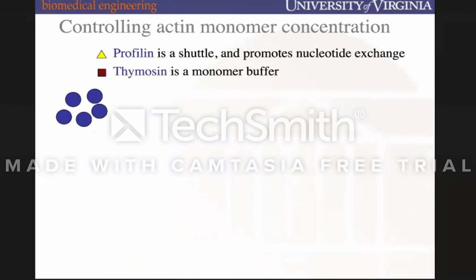There are regulatory mechanisms that control the availability of actin. Without them, we would constantly have actin filaments busting through plasma membranes. One regulator is profilin, which helps with shuttling actin — the treadmilling process is partly facilitated by profilin because it shuttles the actin monomer. Importantly, it also helps promote nucleotide exchange — the removal of ADP from the actin monomer as it's treadmilling — so actin can subsequently find ATP and be ready to participate again in actin polymerization.